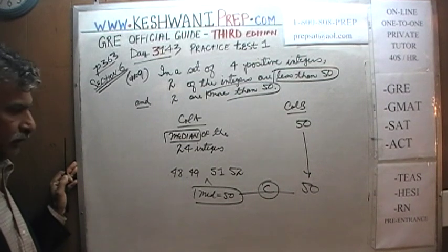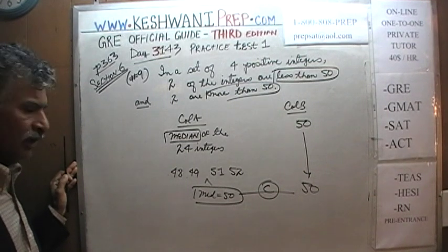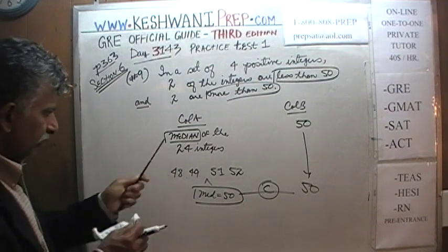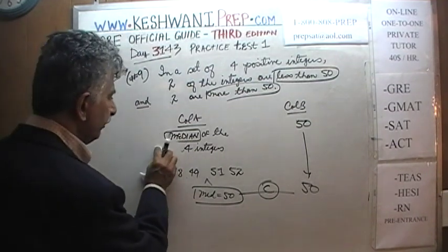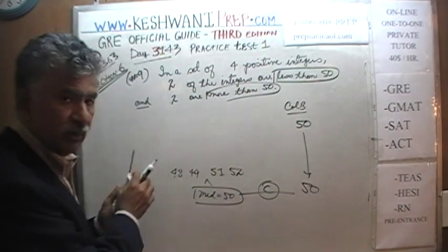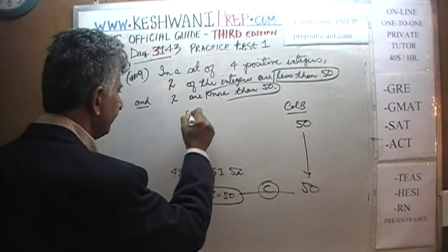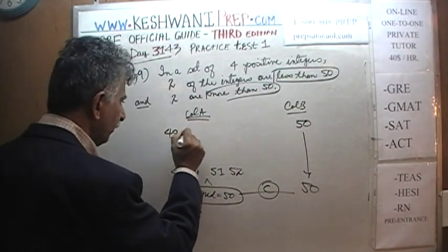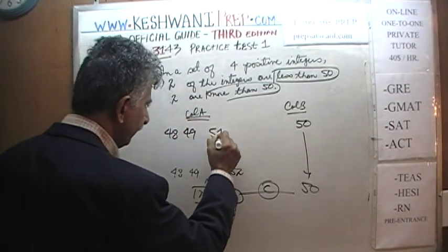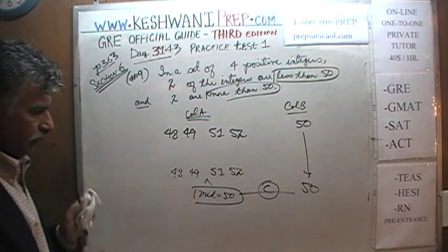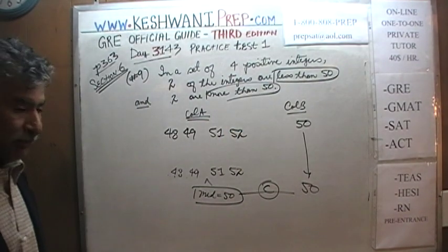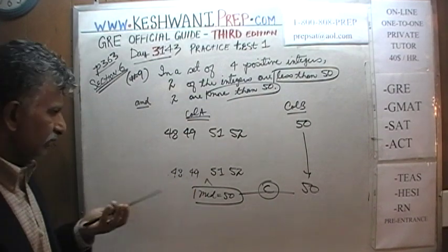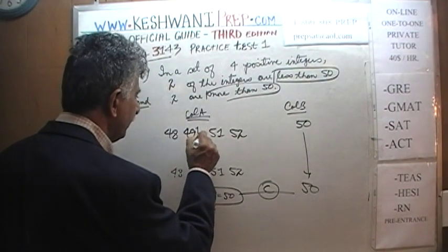Let's make up another scenario. We only have 4 integers, and we have 48, 49, 51, and 52 — the same 4 numbers as before. But let's make one change: instead of 49, let's have 49 and a half.